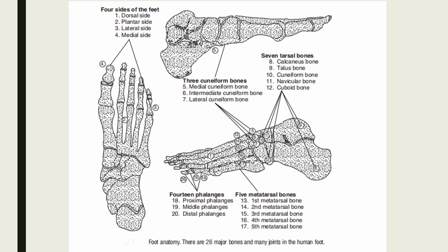Let's now talk about foot anatomy. The four sides of the feet are the dorsal, plantar, lateral, and medial sides. Skeleton of the feet: there are 26 major bones and many joints in the human foot. The skeleton of the foot is divided into three parts: the tarsals, metatarsals, and phalanges.